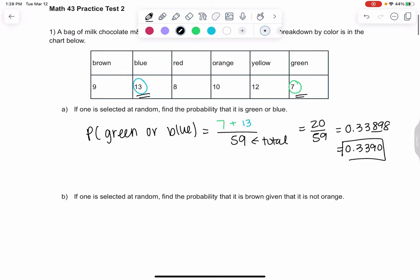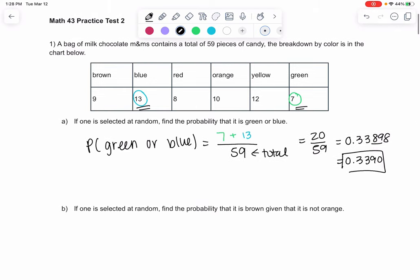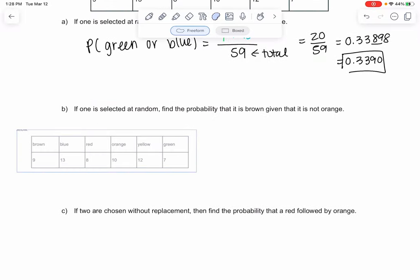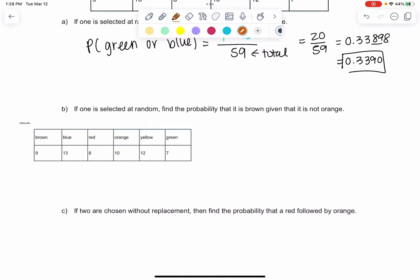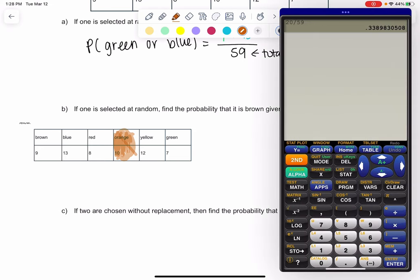Now we want to find the probability that it's brown given that it's not orange. So this one's a little tricky. I'm going to take this table and think about what our new sample space is. Given that it's not orange means the oranges are gone. So our new sample space only doesn't include 59 candies anymore, it only includes the other five colors. So my new total is only 49 because the oranges are not included.